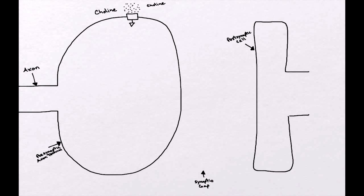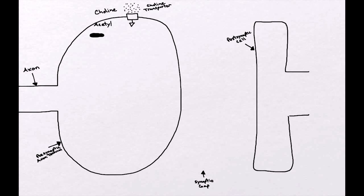Everything starts out in the cholinergic synapse with choline. Choline is something that we take out of our diet, and it is ultimately broken down in our body and moved into the extracellular space, where it is moved into the cytoplasm of the presynaptic terminal through a choline transporter. The choline transporter is very specific to the cholinergic axons, and it moves choline into the cytoplasm of the cell.